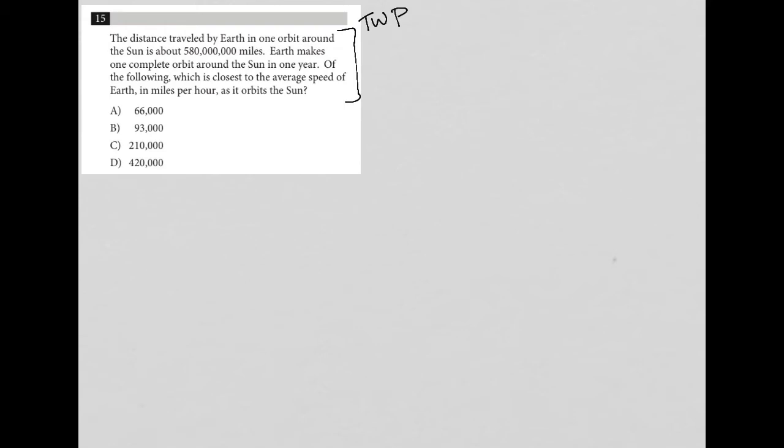Anytime I approach word problems, I like to read it actively, translate anything that I read, and definitely pay attention to any quantitative information that's provided in the question. This question says the distance traveled by Earth in one orbit around the sun is about 580 million miles. So that's quantitative. I'm going to write it down.